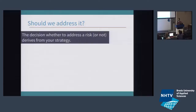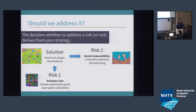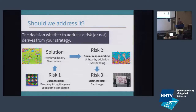Depending on your strategy, you will make a decision whether to address the risk or not. Say you have a business risk: people quitting the game upon completion. You might have a solution — create extra content, DLC packages. This might have an extra risk that your game is so addictive that people overspend or play it too much, which is a business risk of bad image. So blindly going for a solution might work your hand into creating another risk.